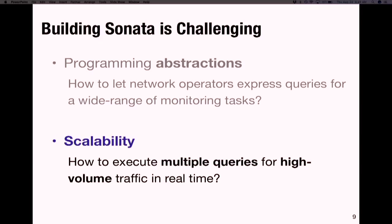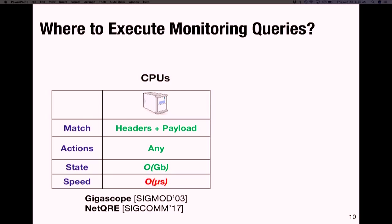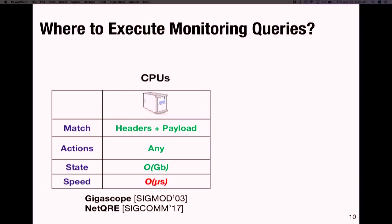We need to figure out how we're going to execute multiple queries for high-volume traffic in real time, and how to scale query execution as both the number of queries and volume of traffic increase. To address this challenge, the first question is what target we are going to use for compiling or executing these queries. In the past, all network monitoring systems offering this level of flexibility used CPUs for query execution.